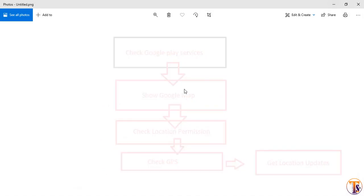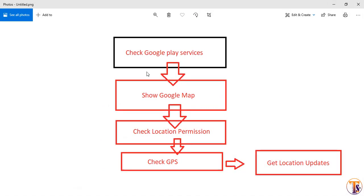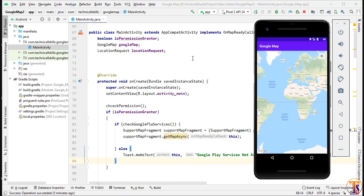Let me show you a picture. Here we have a schema and the structure of how we can use our Google Map. First we have to check Google Play Services, then show the Google Map. Next we check location permission and check the GPS, and finally we get the location update.